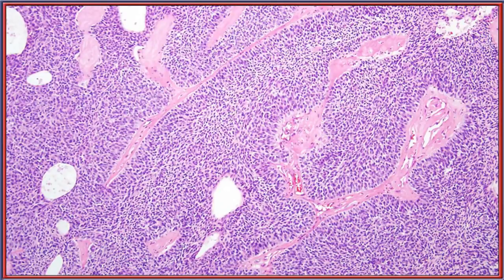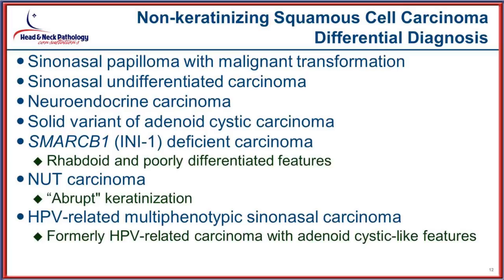On higher power you will see a somewhat basaloid appearance to the cells, with a high NC ratio and absence of keratinization. When you think about new entities or new considerations, they always come from somewhere. The differential for non-keratinizing SCC includes sinonasal papilloma with malignant transformation, sinonasal undifferentiated carcinoma, neuroendocrine carcinoma, solid variant of adenoid cystic, but also the SMARCB1-deficient carcinoma, NUT carcinoma, and HPV-related multiphenotypic sinonasal carcinoma — entities now newly described and separated out as provisional entities.